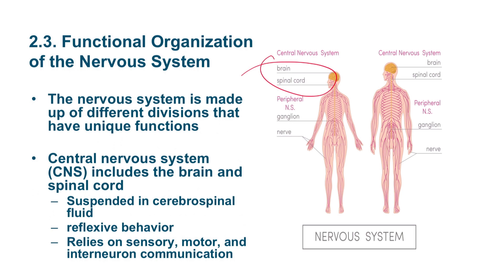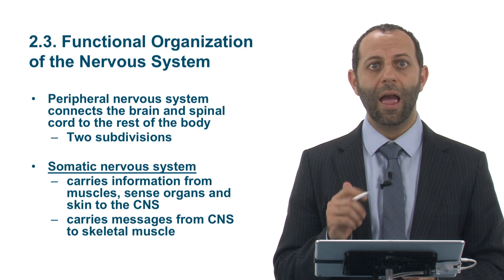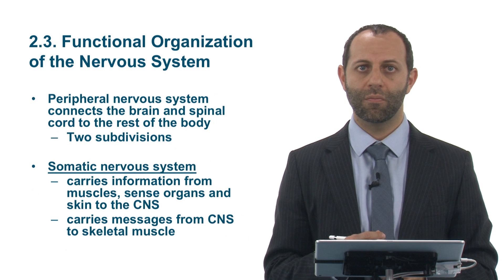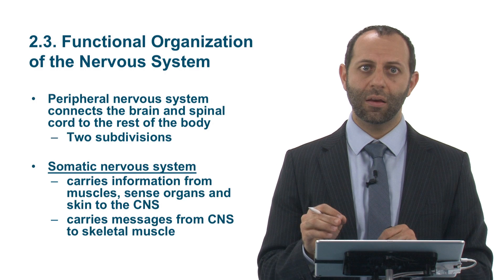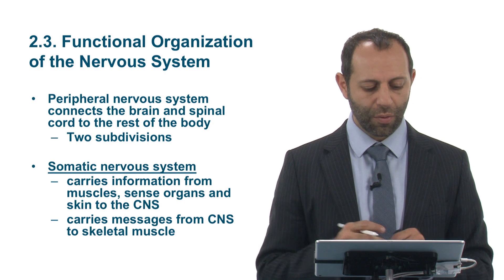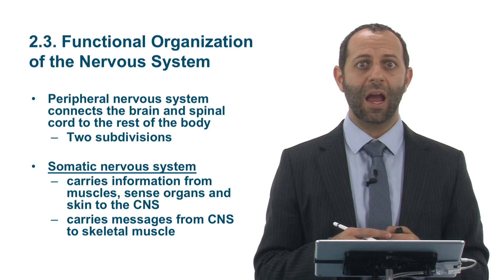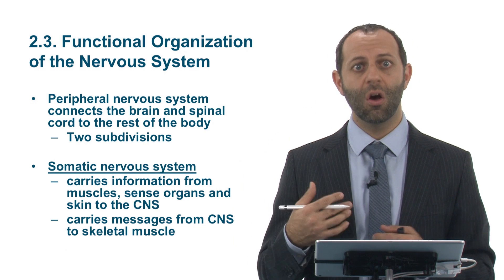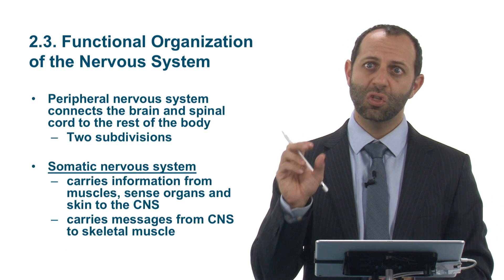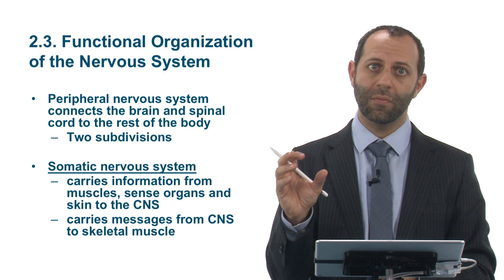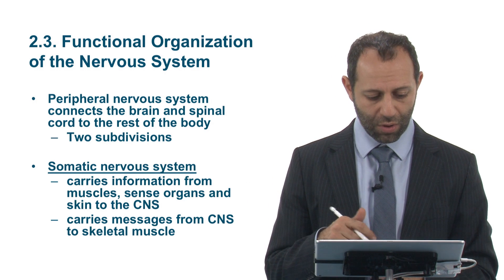Next we have the peripheral nervous system, which connects the brain and spinal cord to the rest of the body. It is divided into two parts. The somatic nervous system carries information from the muscles, organs, and skin to the CNS, and carries messages from the brain to the skeletal muscles. The root word soma means body, so the somatic nervous system deals with movements and voluntary reactions.